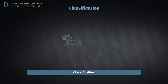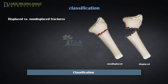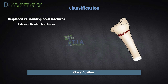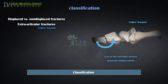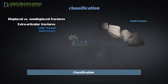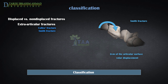Classification of a distal radius fracture can have an effect on how it is treated. Displaced versus non-displaced fractures describe whether the bone fragments have moved out of place or remain in place. A fracture that does not extend into the joint is called an extra-articular fracture. The two prominent types are: a Colles fracture — a fracture of the distal radius within two centimeters of the articular surface with posterior displacement of the distal fragment, accounting for 90% of all distal radius fractures — and a Smith fracture, which is less common and is the reverse of a Colles fracture, where the distal fragment typically shifts toward the palm side.